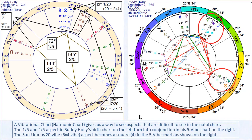What do these aspects look like in the five vibration chart? If you've learned about vibrational or harmonic astrology, it should be obvious. On the right side is the five vibration chart. What happens to Venus, Jupiter, and Uranus? Of course they're conjunct — they happen to be in Libra at 16, 18, and 21 degrees. If that's not clear, you need to watch the earlier videos in this series.